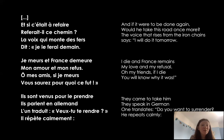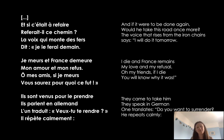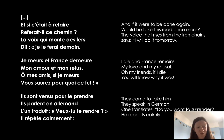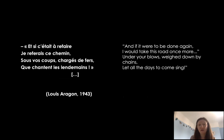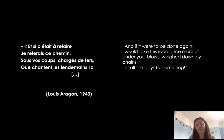And if it was to be done again, would he go down this same path? The voice that rises from the iron chains says: 'I will do it, I will do it tomorrow. I die, and France remains. My love and my refusal. Oh my friends, if I die, you will know why it was.' They came to take him — they speak in German, one translates: 'Do you want to give yourself up?' He repeats calmly. And our last stanza reads: 'If it was to be redone, I would take this path again. Beneath your blows, your beatings, weighed down by the irons and chains — may the tomorrows sing, may all the tomorrows sing, may all the days to come sing.'